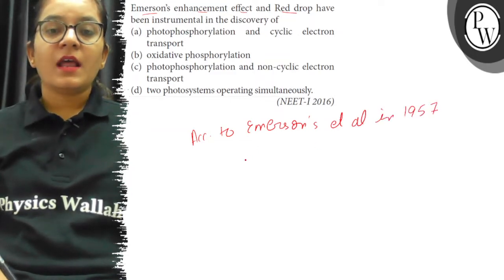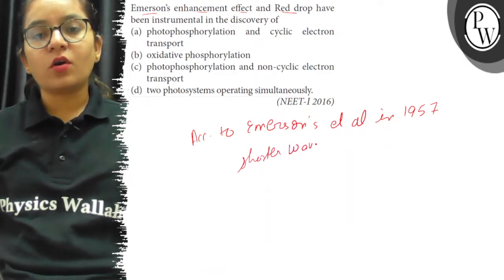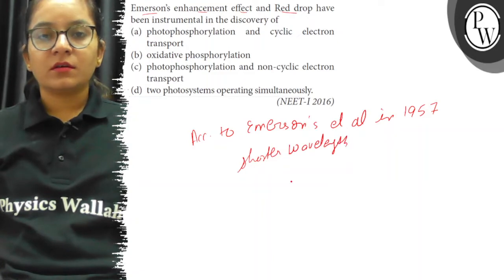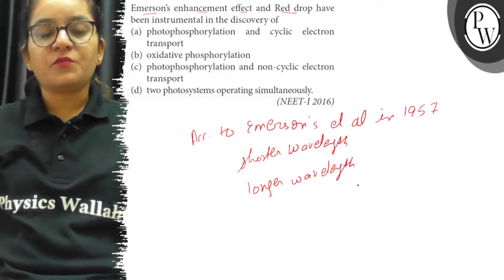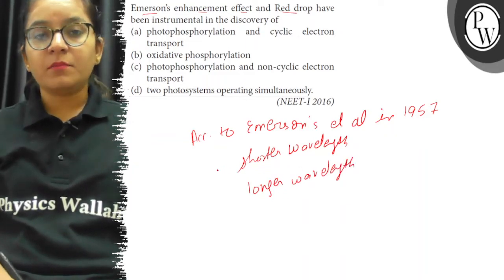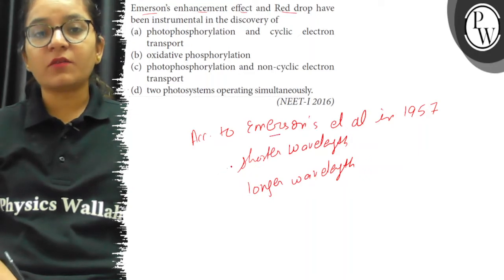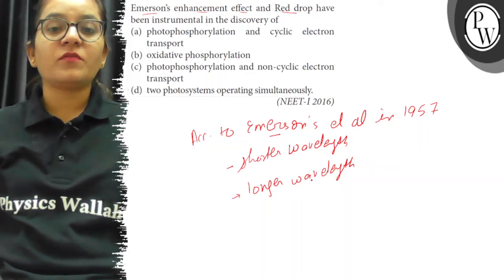they gave light of shorter wavelength as well as longer wavelength separately to the plants to see the effect on the rate of photosynthesis by the wavelength of light. When Emerson gave shorter wavelength of light, it affected photosynthesis; and a longer wavelength of light also affected photosynthesis.